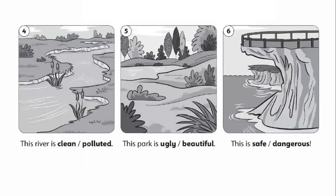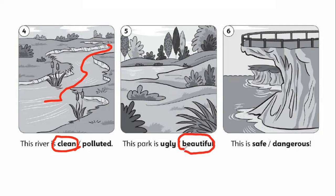In number four, we can see that the river is clean — there is no dirty things, no sewage, no rubbish. So the river is clean. In number five, this park has a lot of trees — it's clean, so it's beautiful. The park is beautiful. In picture number six, there is nothing broken here and it's completely safe to stand in. This is safe.